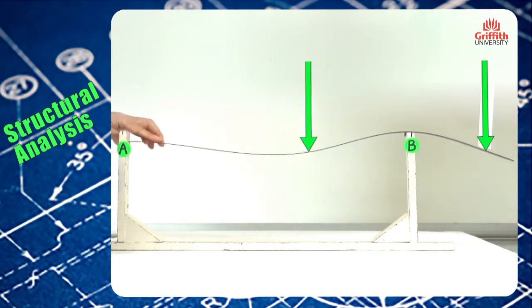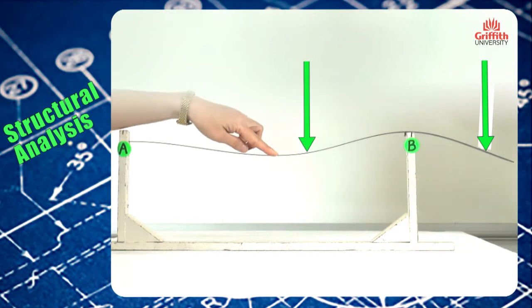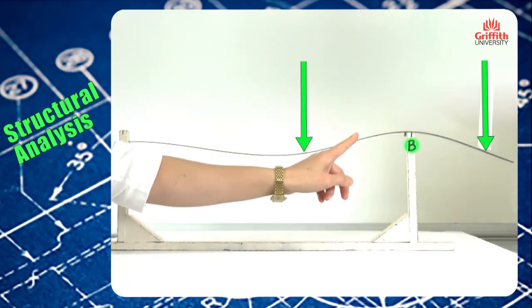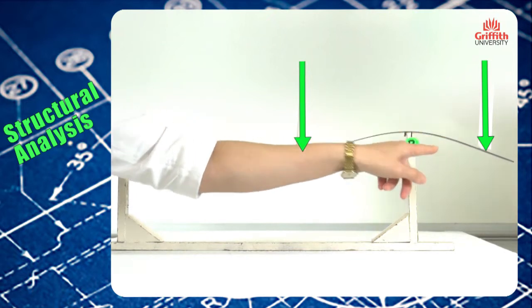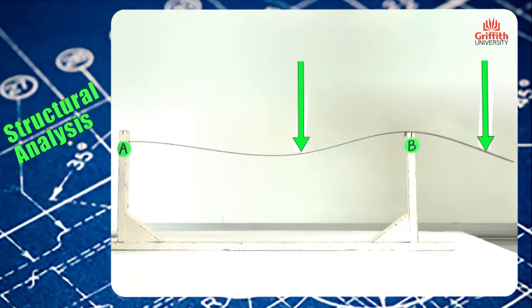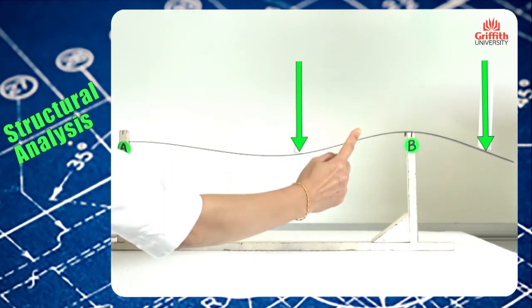But due to the second concentrated load, the curvature changes sign again into a convex shape. So there will be two contraflexure points along this beam: one is somewhere here, the other one is somewhere here.